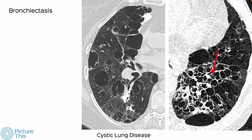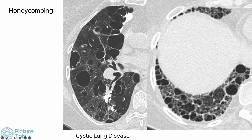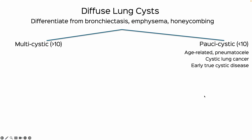The first step is: is this really diffuse cystic lung disease or cystic ILD? This is classic bronchiectasis — branching cysts extending from the hilum to the periphery. These are centrilobular lucencies without walls, so that is centrilobular emphysema. And this is honeycombing — cysts with shared walls starting in the subpleural interstitium, usually multilayered, extending up to the hilum.